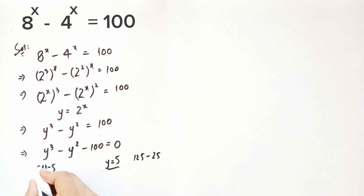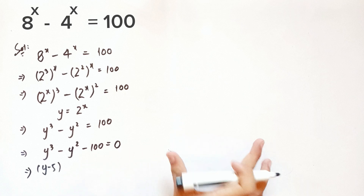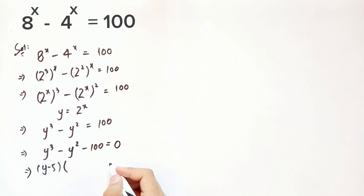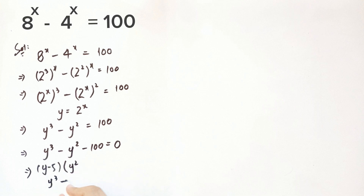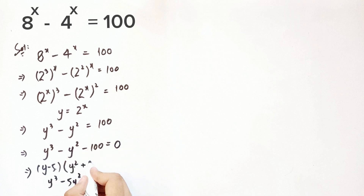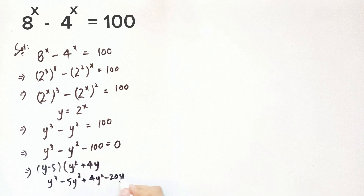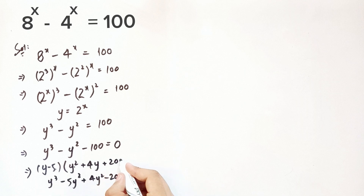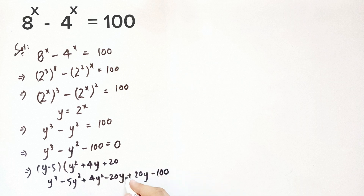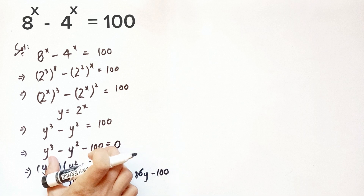Since y equals 5 is a solution, (y minus 5) is a factor. To find the other factor, we perform long division. Multiplying y by y squared gives y cubed, and with negative 5y squared we account for the y² term. Continuing: multiplying y by 4y gives 4y squared minus 20y, and multiplying by 20 gives 20y, with the constant working out to cancel. This gives the second factor.